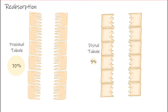About 70% of reabsorption occurs in the proximal tubule and only about 5% in the distal tubule, so it shouldn't be surprising that there are structural differences between cells lining these different regions. In the proximal tubule, where most reabsorption occurs, the microvilli of the apical membrane are much more developed, providing greater surface area to facilitate reabsorption. The apical membrane of distal tubular cells has far less developed microvilli and much less surface area.